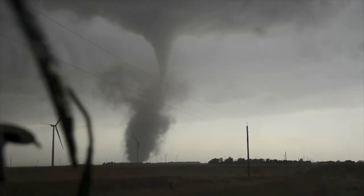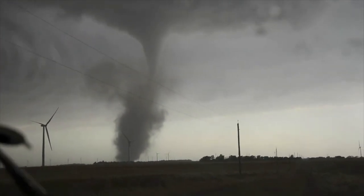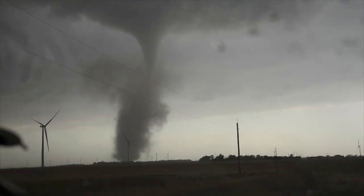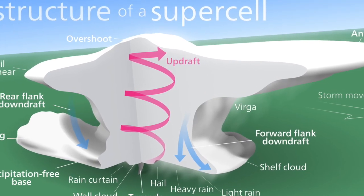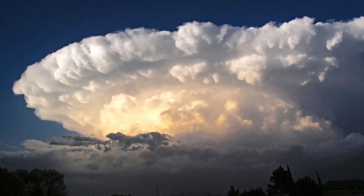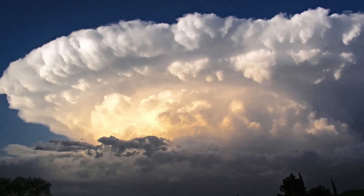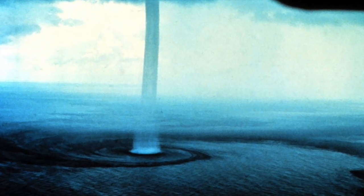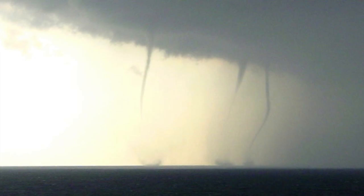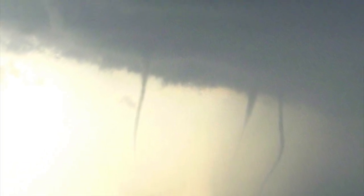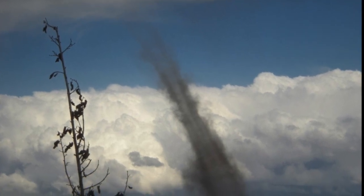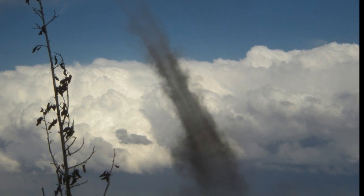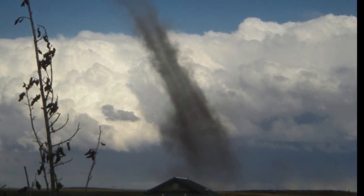Are there different types of tornadoes? That's a great question. Here are the different types. One type is called a supercell — a large, long-lived thunderstorm that can produce some of the largest and most violent tornadoes. Another one is called a water spout, which forms over water and usually disappears when it hits land. And the last one is a land spout, which is similar to a water spout but on land — it's weak and not associated with a vortex of air from a thunderstorm.